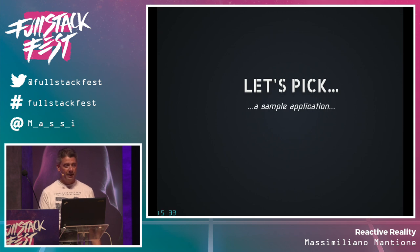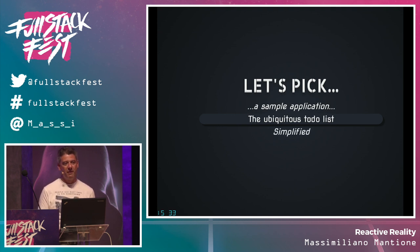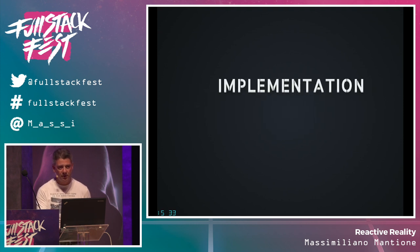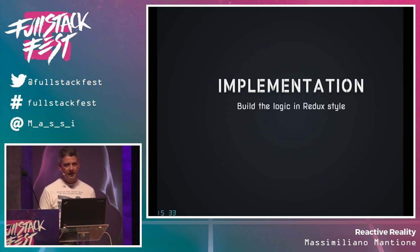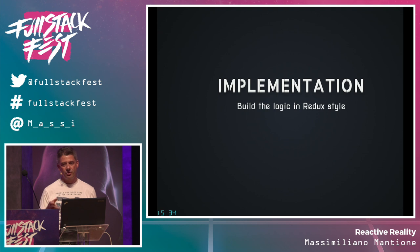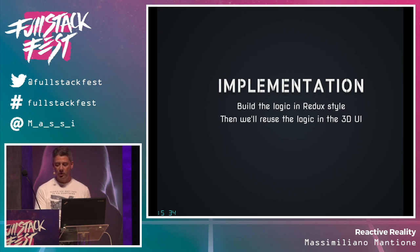Let's pick a sample application — the ubiquitous to-do list. It's very simplified as a proof of concept. I built the logic in Redux style: there's an immutable state, every time something happens I get a new version of the state, the view emits actions that switch the system to the next state, which triggers a re-render. This way, we can reuse the same logic in both the 2D and 3D UI — we're not going to touch any line of that code.